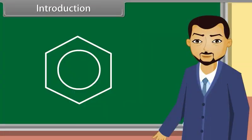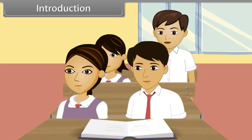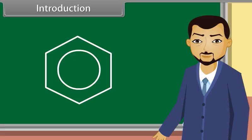And now, who will define aromatic hydrocarbons? Sir, aromatic hydrocarbons are those which contain one or more benzene rings. Very good, Rahul. Today, we will learn about aromatic hydrocarbons. Come, let's start.